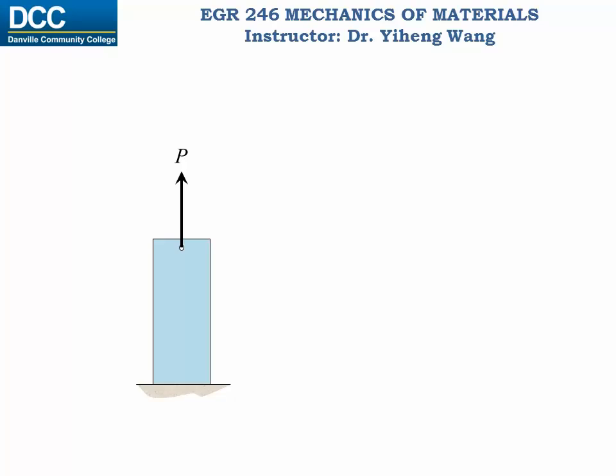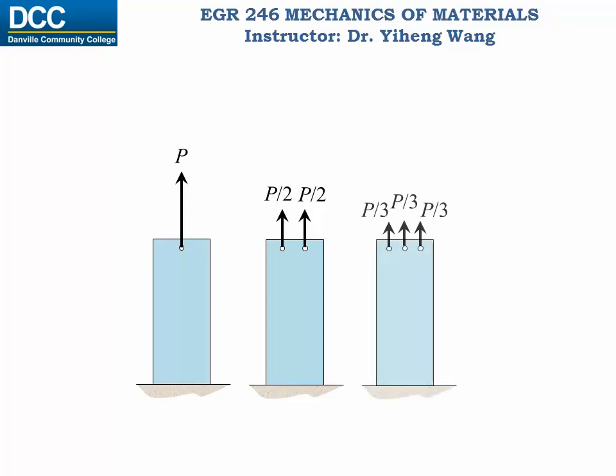If you look at this member with the loading of P, what if we change the loading to this, or this? Are they the same? From statics, we know that these three are equivalent systems since the resultant force in each case is the same. But close to the area of application, the stress and strain distribution in these three cases will be different.